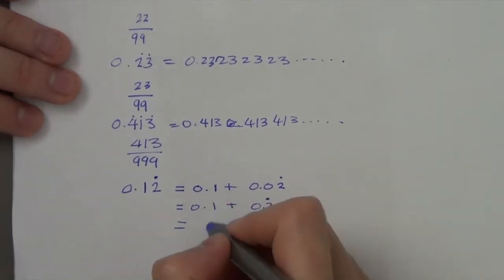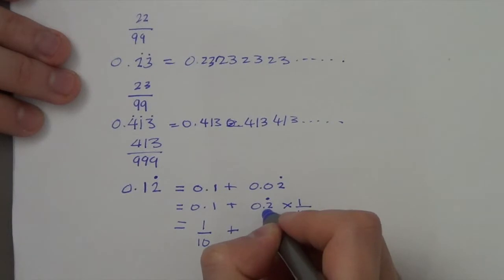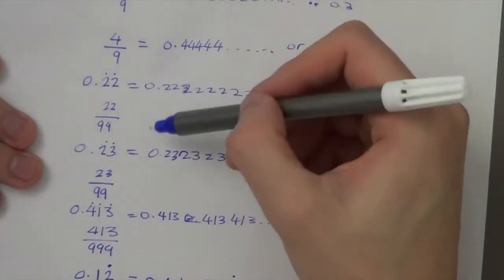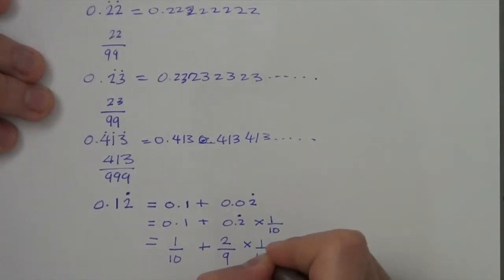Now, 0.1 is 1 over 10. 0.2 recurring, we know, is 2 over 9 from this pattern here. Now we times by 1 over 10.